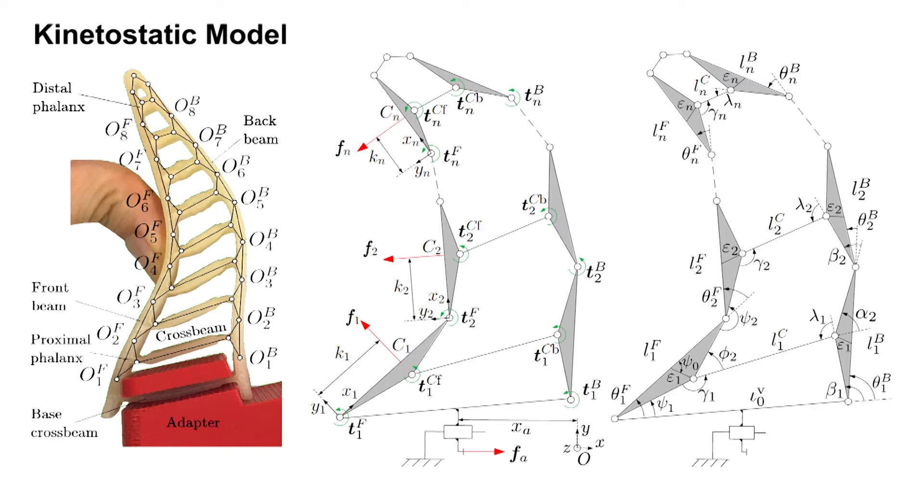The finger is discretized into rigid elements connected by revolute joints, and each of the latter has an associated rotational stiffness.